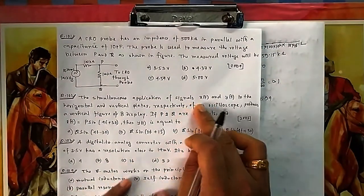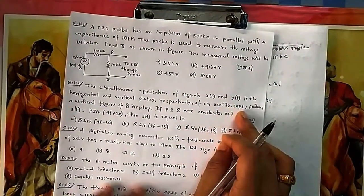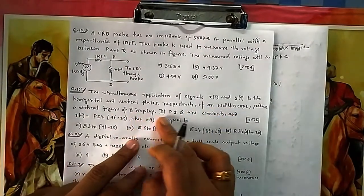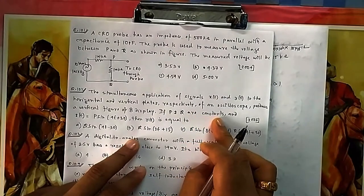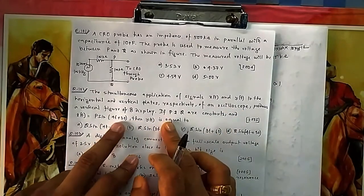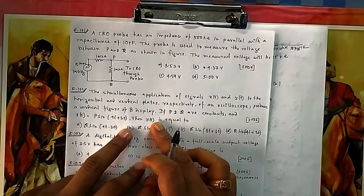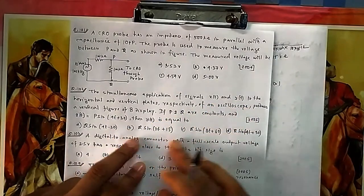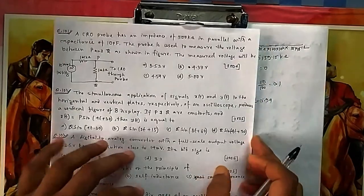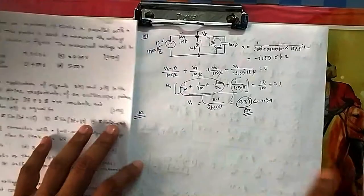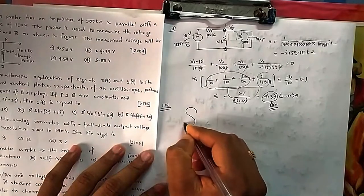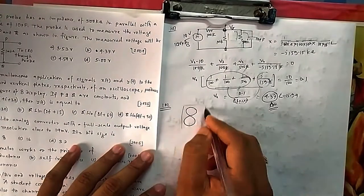Question 102: The simultaneous application of signals x(t) and y(t) to the horizontal and vertical plates respectively of an oscilloscope produces a figure-of-8 Lissajous display. Both x(t) and y(t) are sinusoidal signals. The output pattern looks like an '8', so we draw a vertical and horizontal line through it to count intersections.